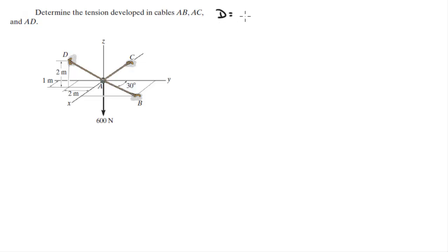The position of D is at 1i minus 2j plus 2k. The next thing I'm going to do is find the magnitude of D in order to find the unit vector of D. The magnitude of D is given by the square root of the x component squared plus the y component squared plus the z component squared, which is 1 squared plus 2 squared plus 2 squared, and it is equal to 3.